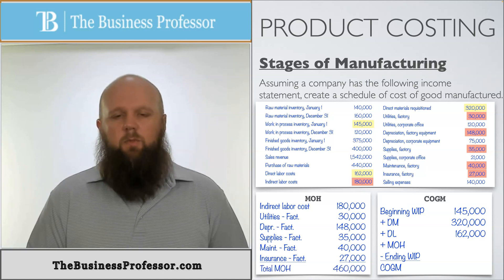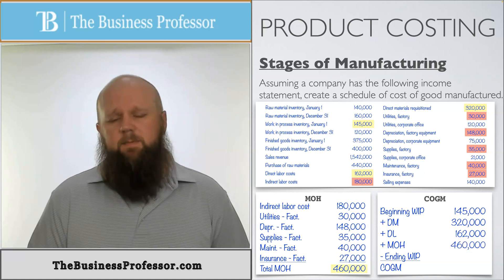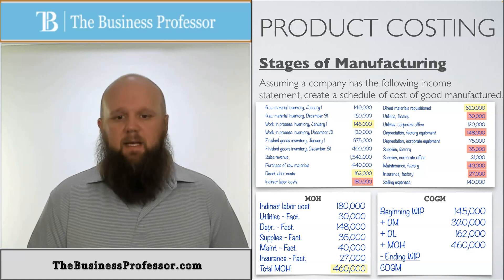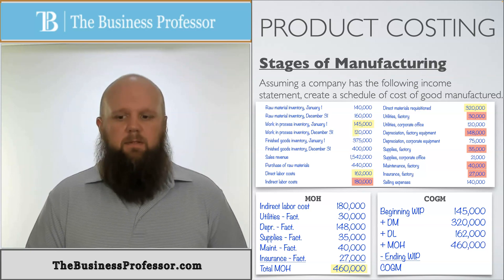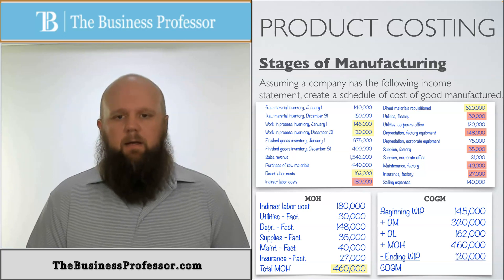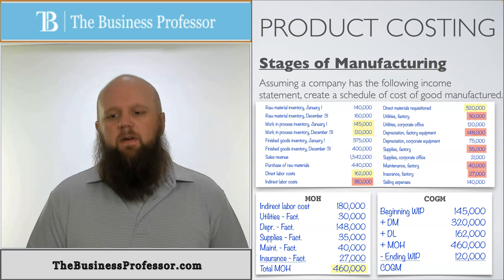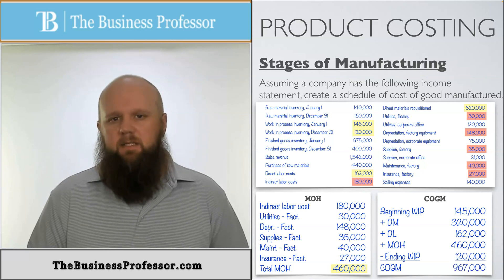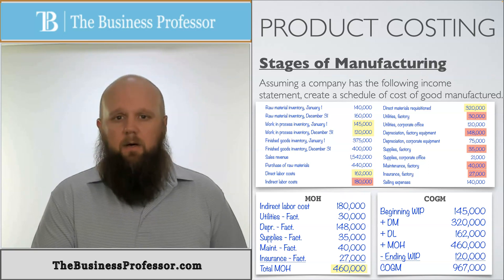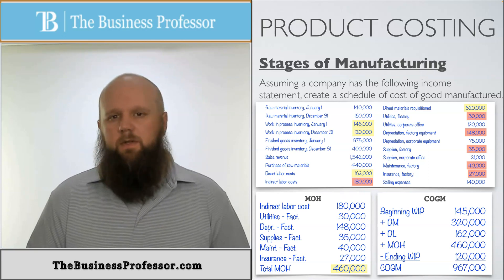We move that $460,000 over to our schedule of cost of goods manufactured. The last piece we need is ending work in process, which is given as work in process inventory December 31st: $120,000. Including that and doing the calculations, we find that our cost of goods manufactured is $967,000 — the amount of cost that moves out of work in process and into finished goods.